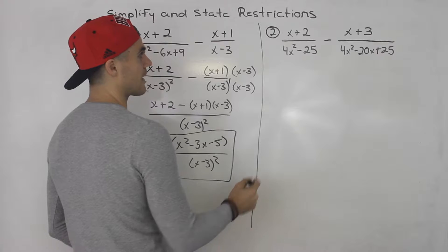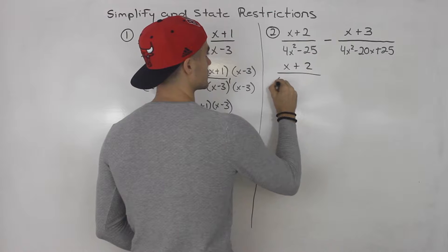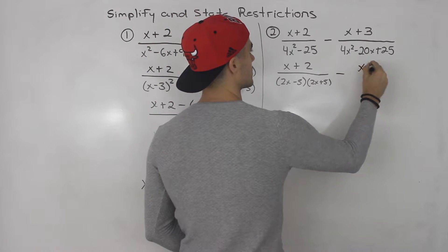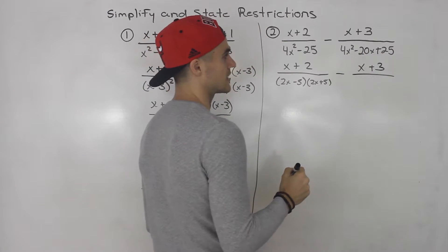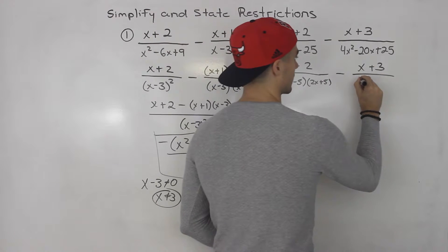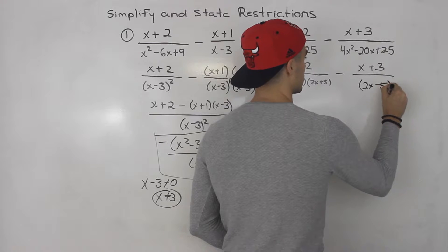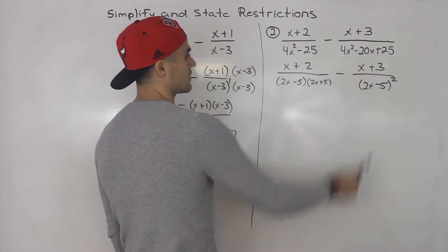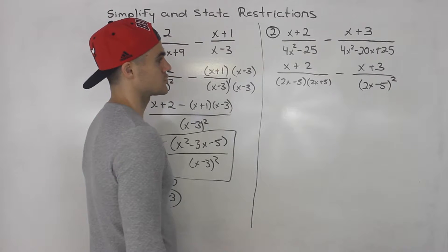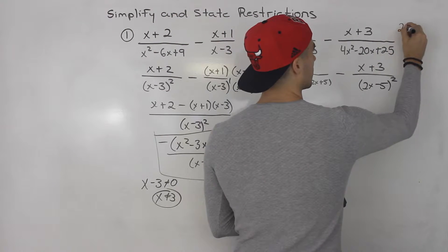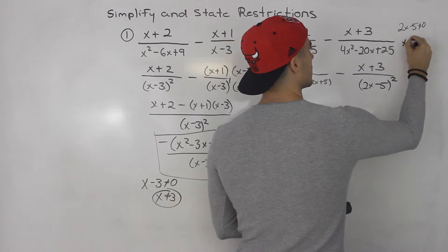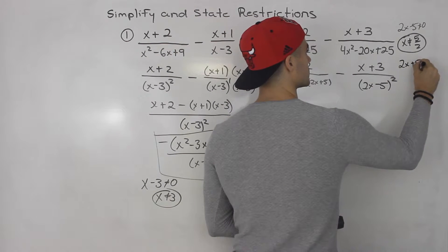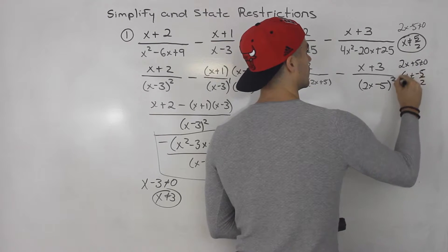We need to factor 4x squared minus 25. That is a difference of squares, so it factors into 2x minus 5 times 2x plus 5. And then the other denominator has x plus 3 and 4x squared minus 20x plus 25. When you do decomposition and factor that, it actually factors into 2x minus 5 squared — it's a perfect square polynomial, 2x minus 5 times 2x minus 5, rewritten as 2x minus 5 squared. Then get your restrictions: 2x minus 5 cannot equal 0, which means x cannot equal 5 over 2. And 2x plus 5 cannot equal 0, so x cannot equal negative 5 over 2.